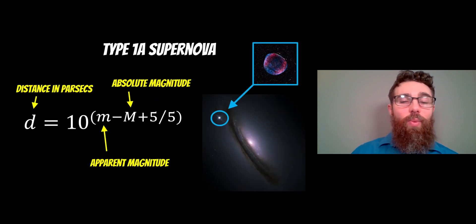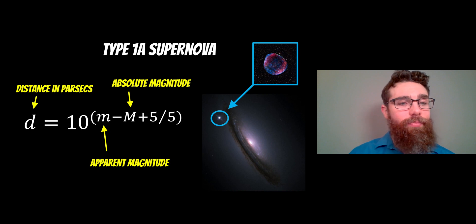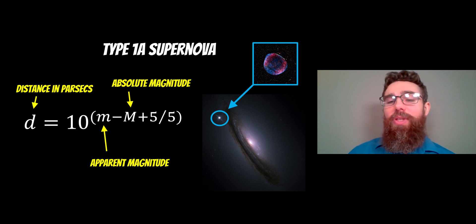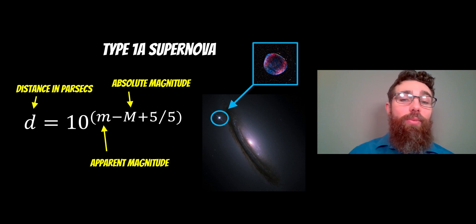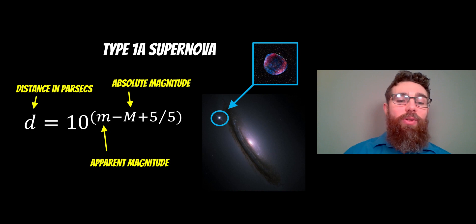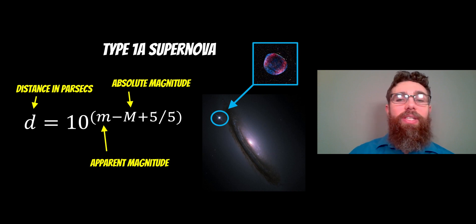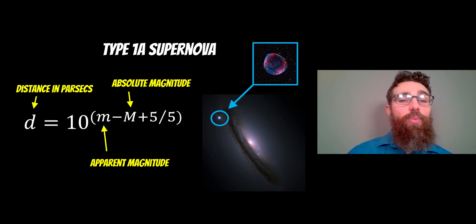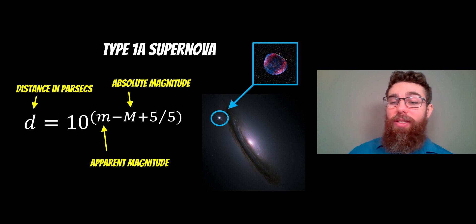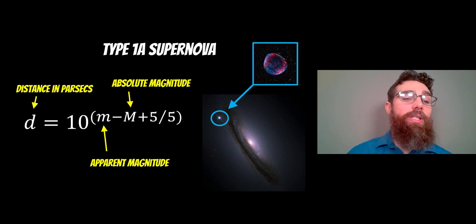If galaxies are a little further away, we can use Type 1a supernovae. These always explode with the same energy, so their absolute magnitude is always the same. All we have to do is measure the peak apparent magnitude as seen from Earth, and with those two values we can work out the distance to the galaxy. These are quite useful for more distant galaxies because supernova explosions are very bright — they can outshine whole galaxies.